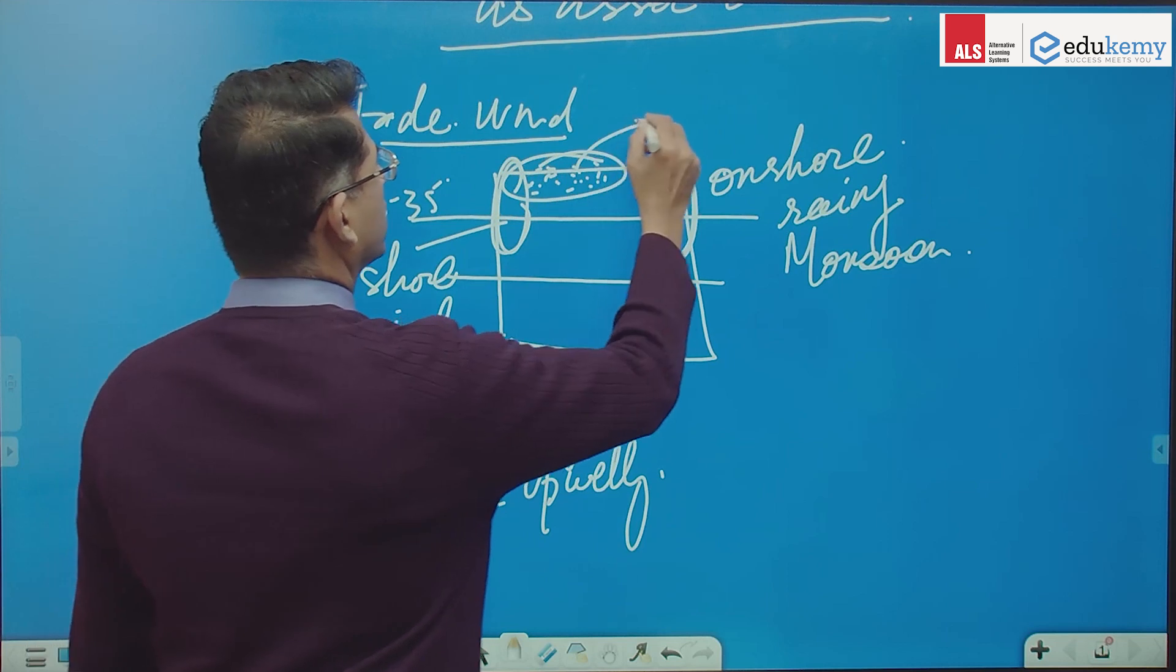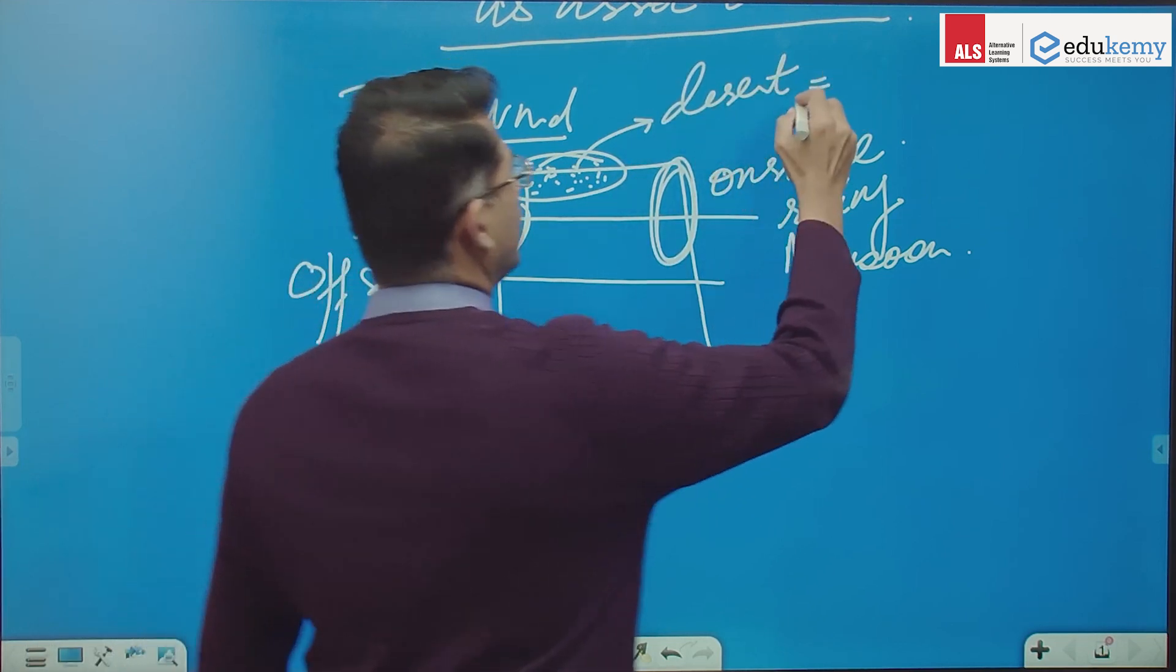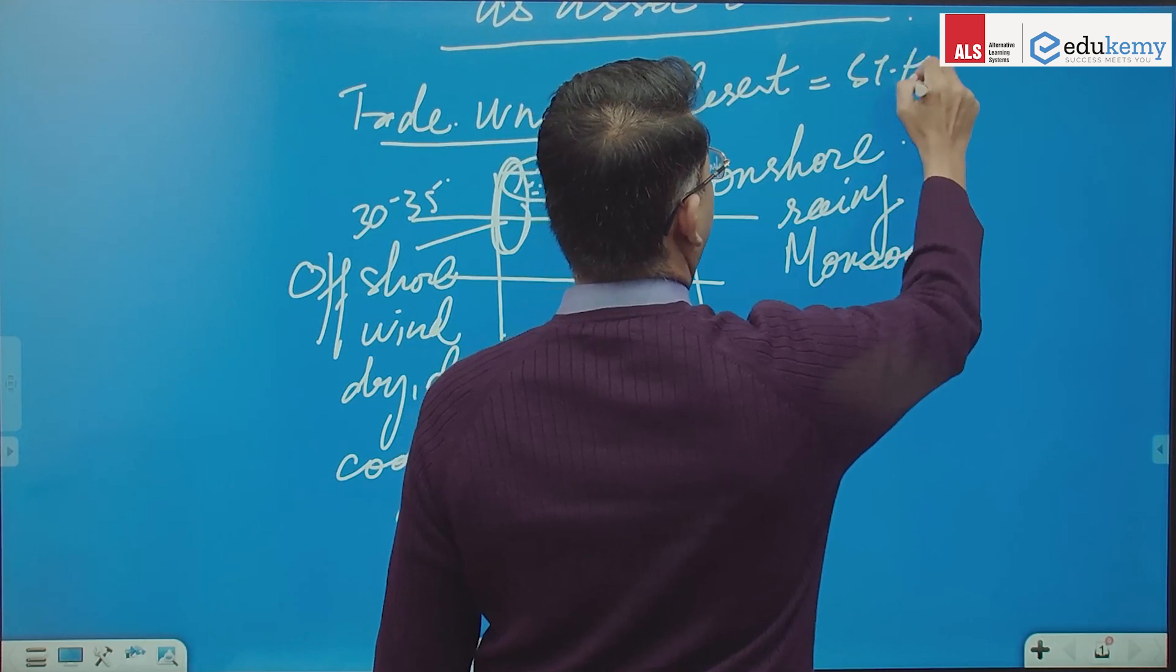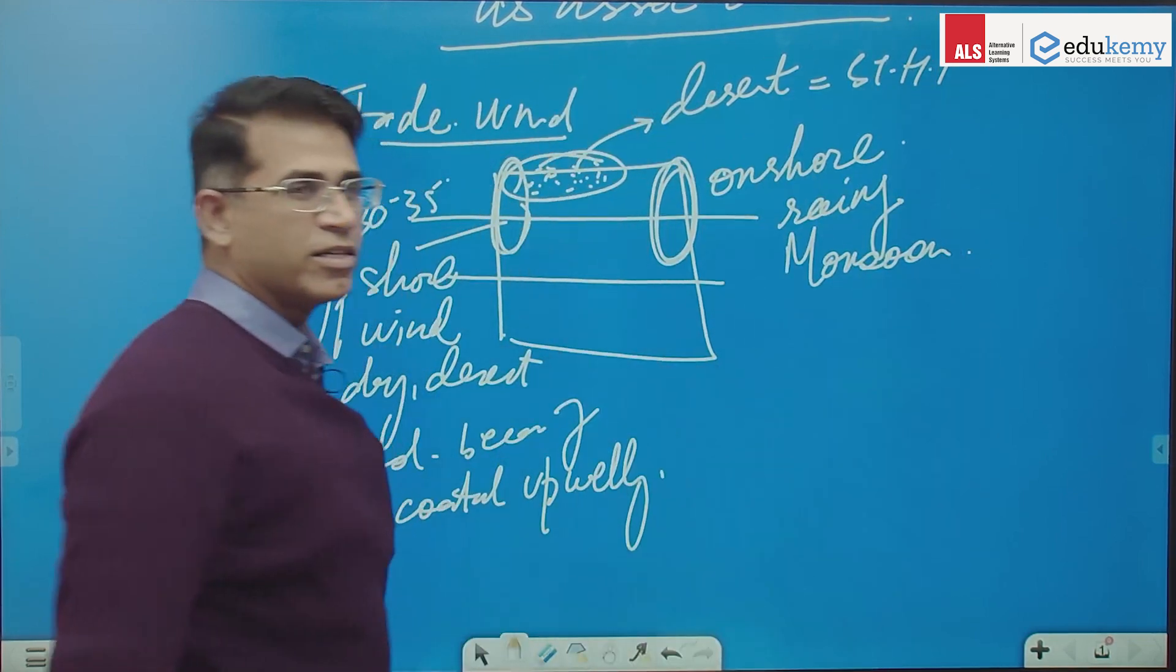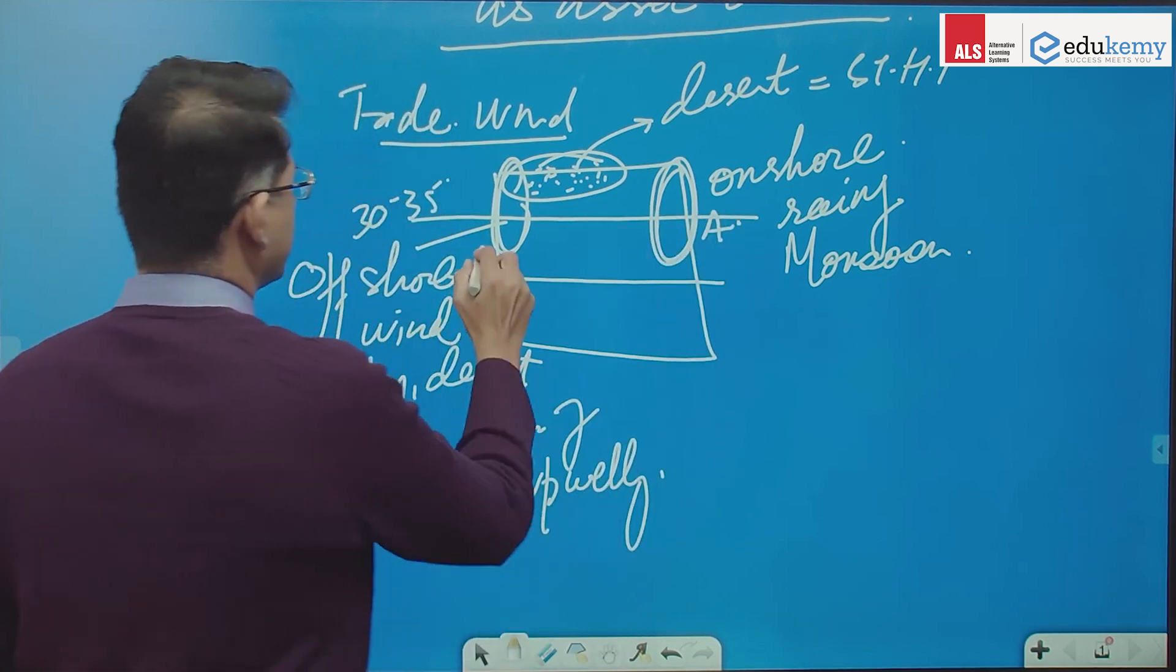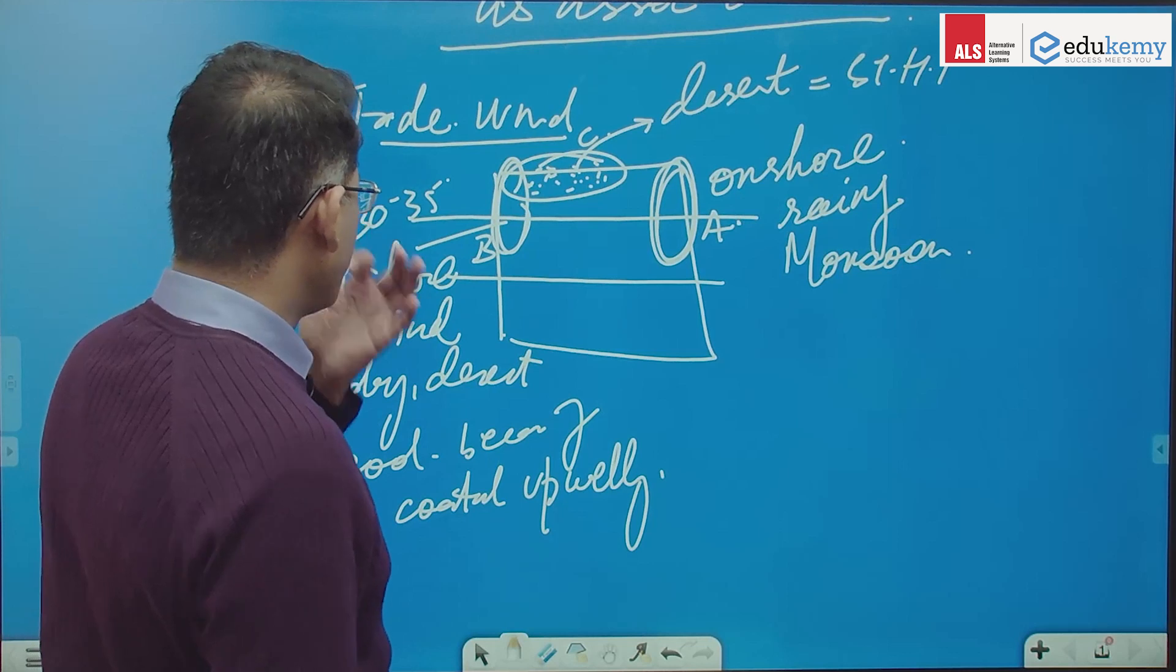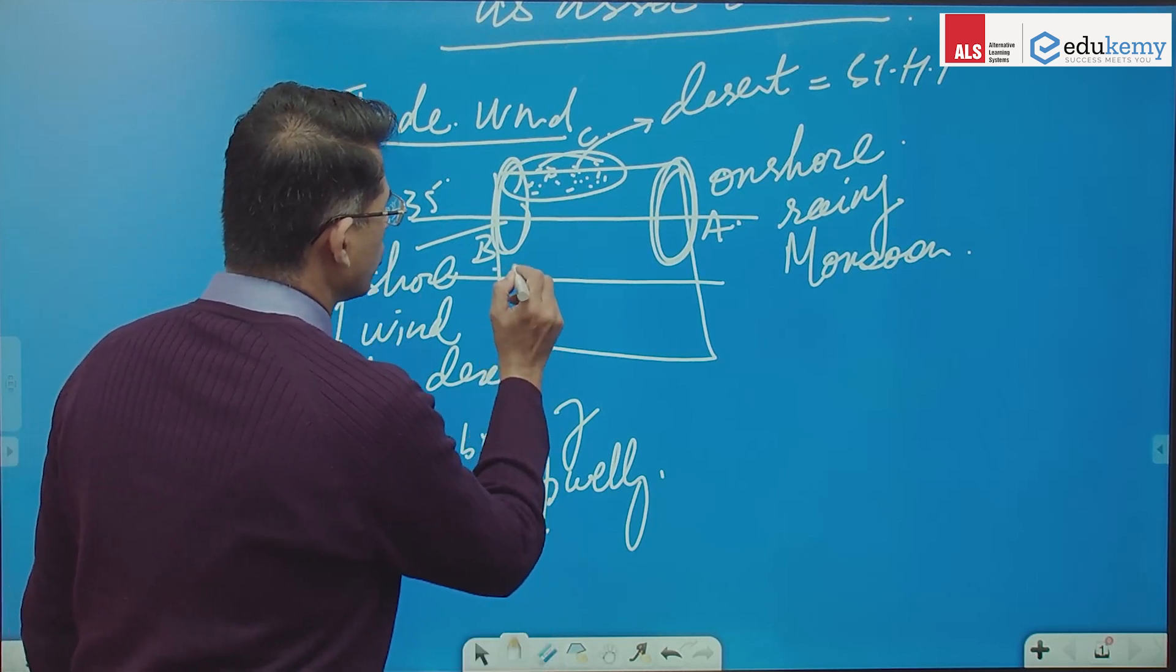This is also the desert and this desert is because of tropical high pressure, calm conditions. So A, this is B, this is C and we added one more thing that there is a very narrow zone here,